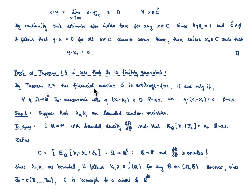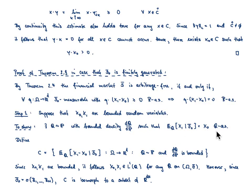In step one, I assume that x0 and x1 are bounded random variables. This eliminates integrability concerns with respect to any probability measure on the measurable space. What we want to show is: there exists an equivalent probability measure Q with bounded density such that the conditional expectation of x1 given F0 under Q equals x0, Q-almost surely.